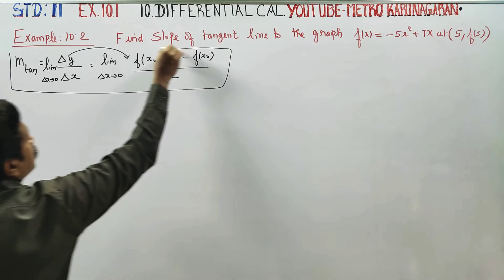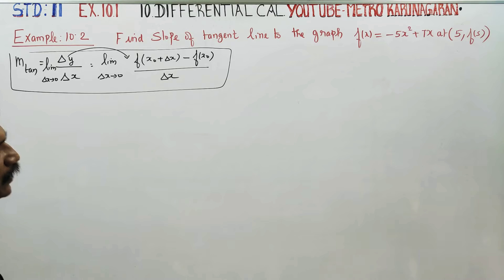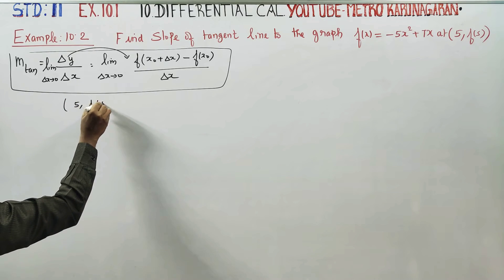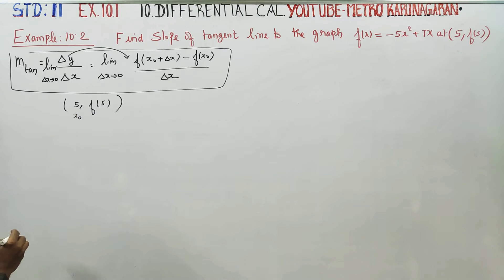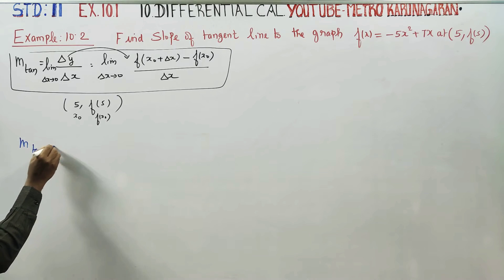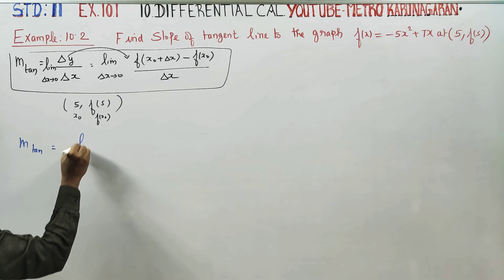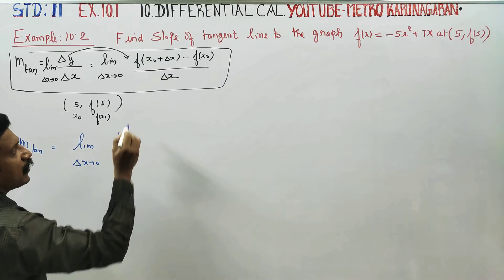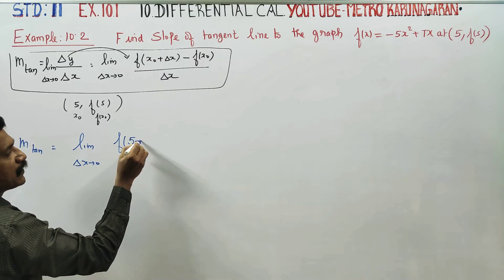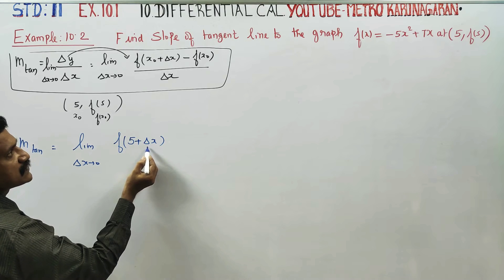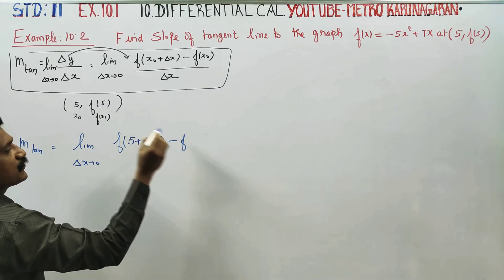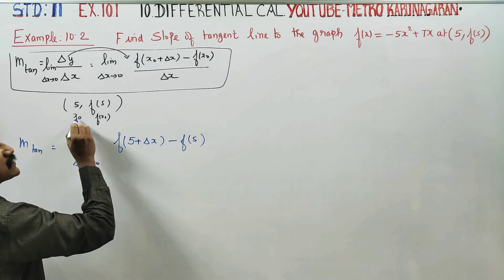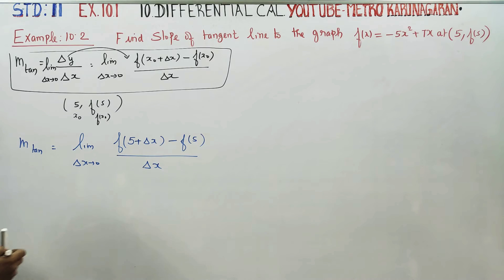Let's start with the sum. x₀ is 0 — this is the point. f of x₀ plus delta x minus f of x₀, a small change in the value of x. Here x₀ is 5. So f of x₀ plus delta x means f of 5 plus delta x.